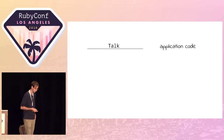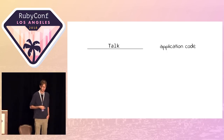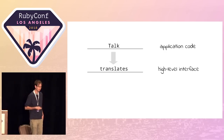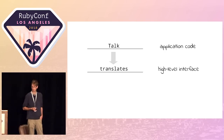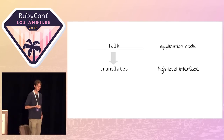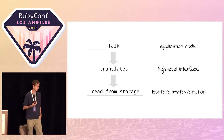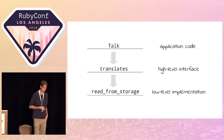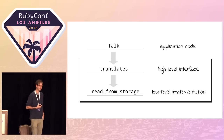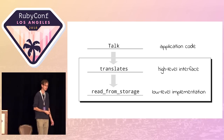From a high-level view, you have your talk — that's the application code — calling the class method `translates`, which is in the gem. That's the high-level interface. Then `translates` is defining some methods in terms of some internal methods like `read_from_storage`. That's the low-level implementation. What these libraries give you is this package: a combination of the high-level interface and how they actually do it.